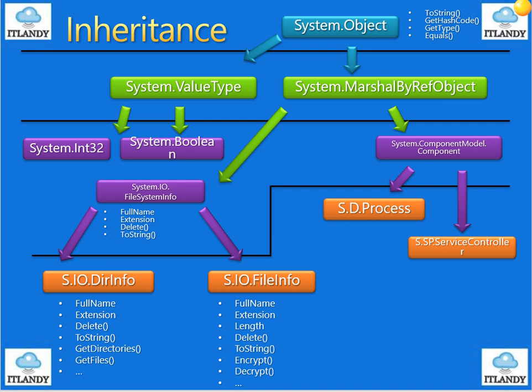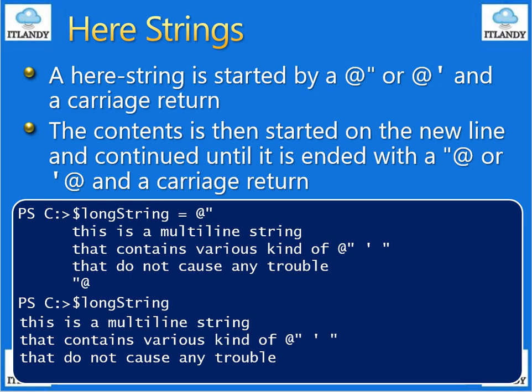Next, we have here strings. A here string is used to embed a large chunk of text inline in a script. This can be powerful when you are generating output from another program. When a here string is displayed, it contains all of the lines that were entered. Here strings have special quoting rules — sub-expressions are both fine here. This includes both single and double quotes. Here strings are started by the at-sign with a double quote or at-sign with a single quote. The content then starts on a new line and continues until it is ended with a double quote and at-sign or single quote and at-sign.